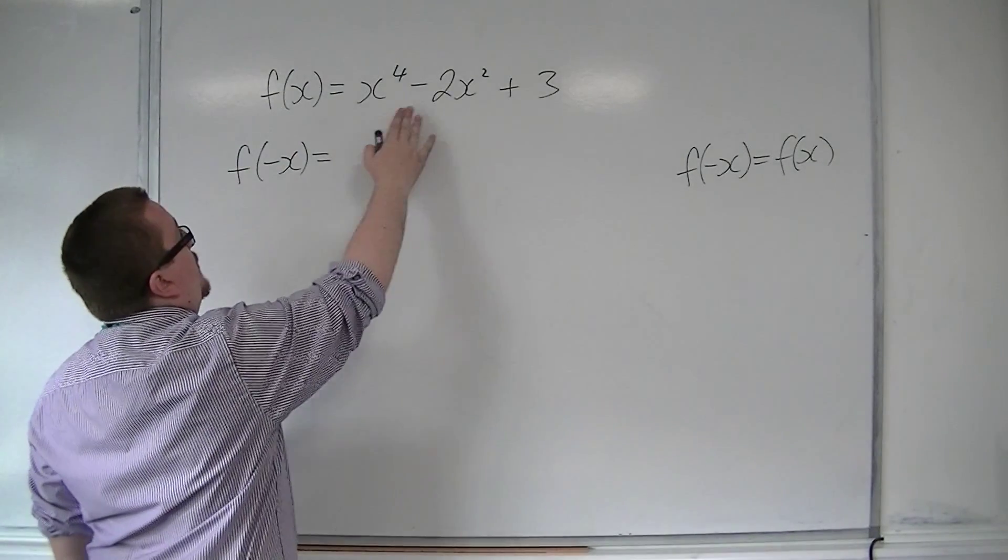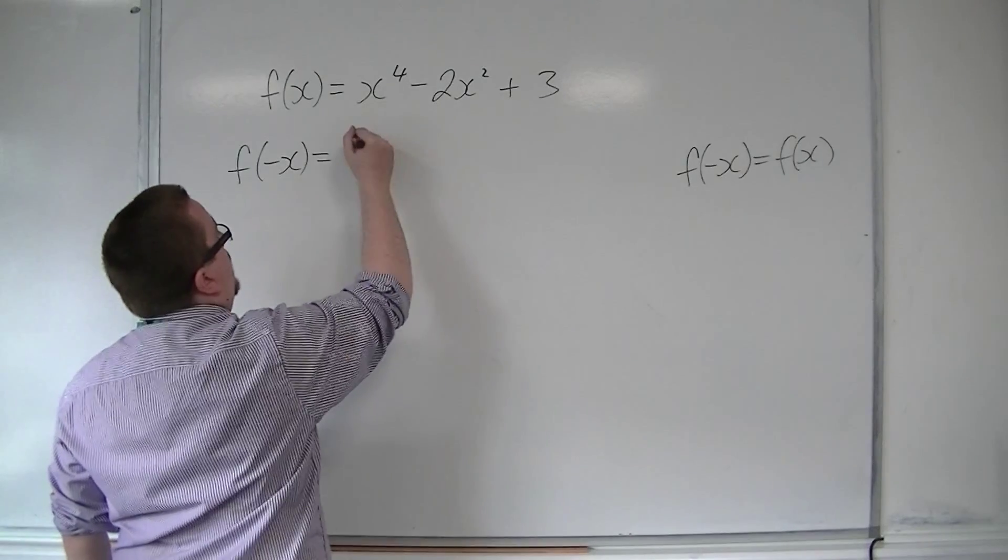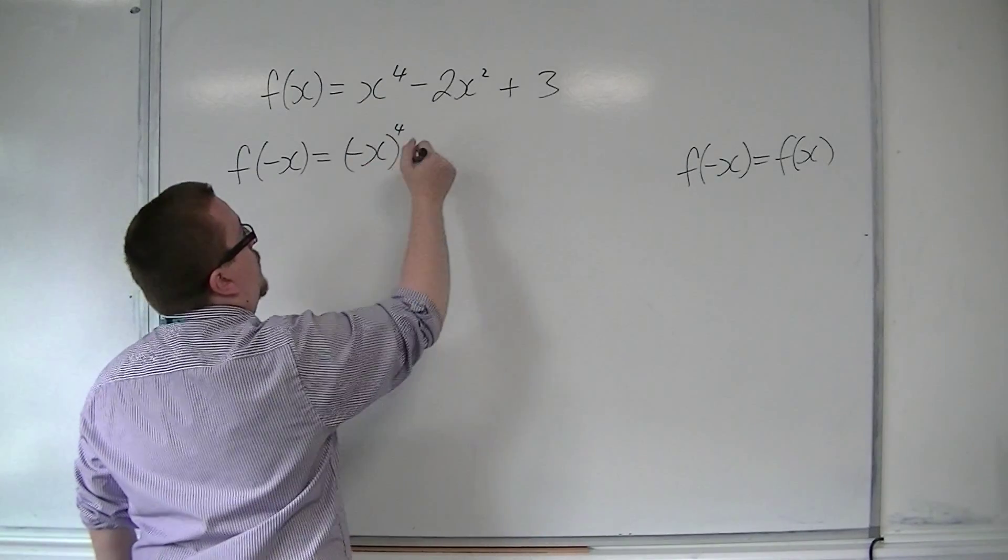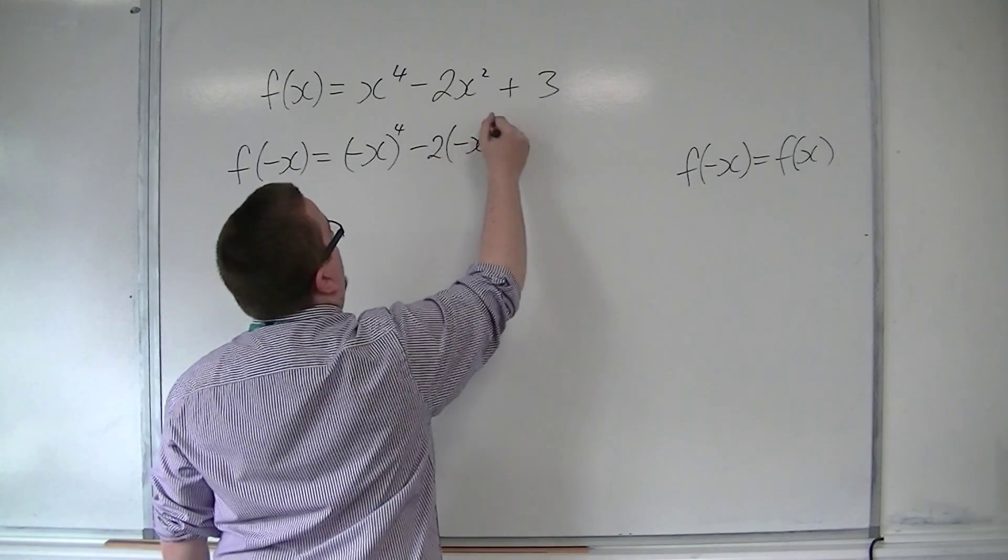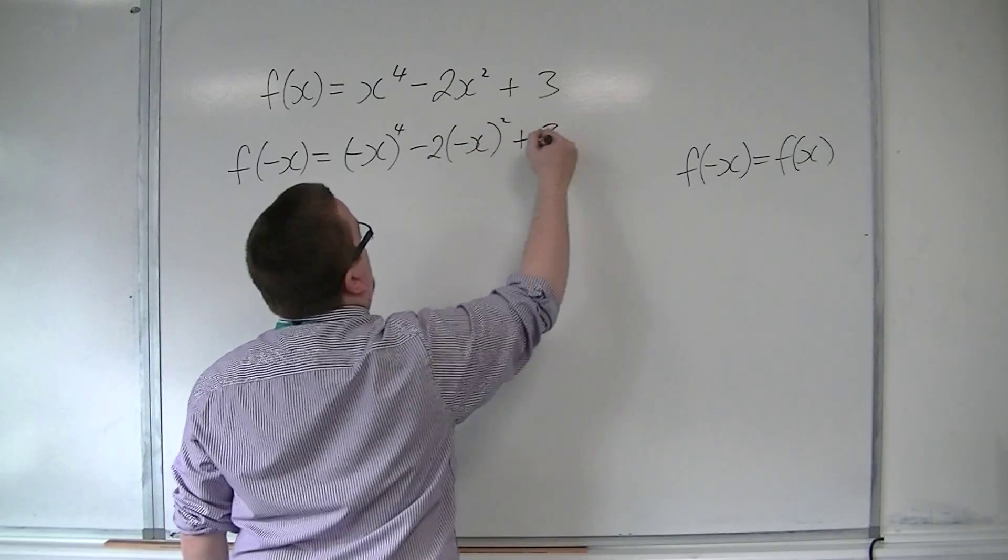So substitute into each of these minus x. So we have minus x to the 4, take away 2 lots of minus x squared, plus 3.